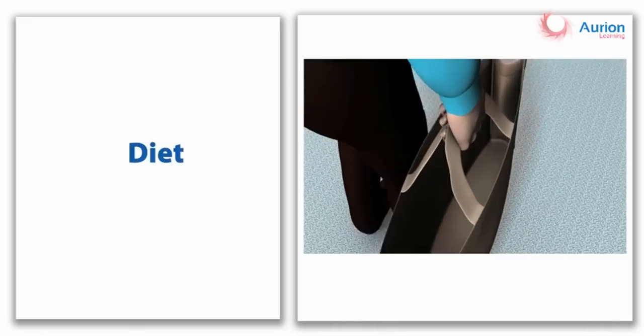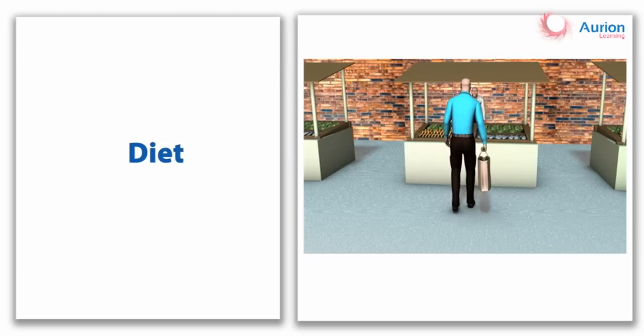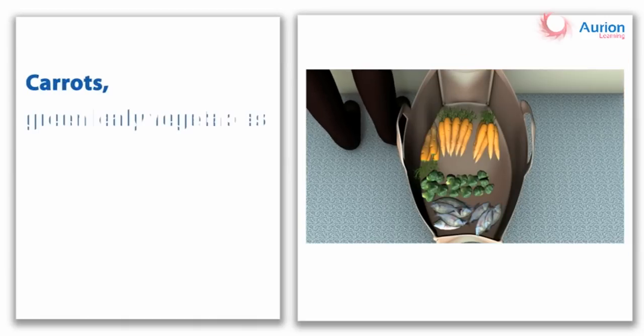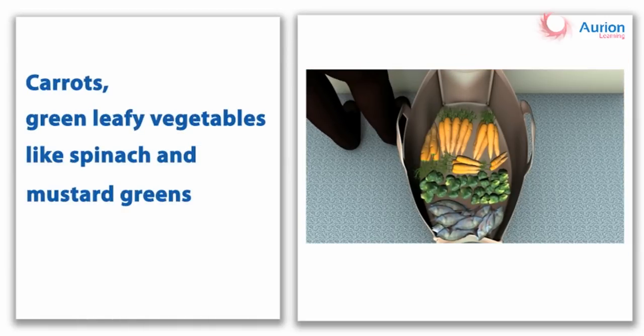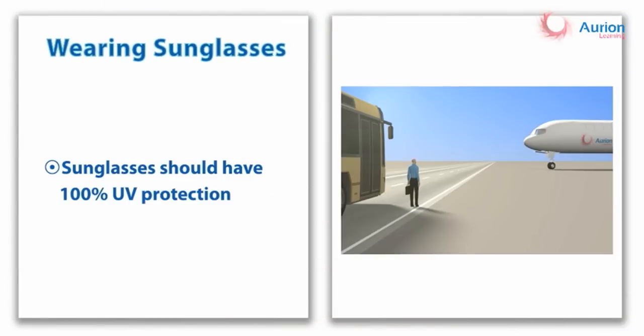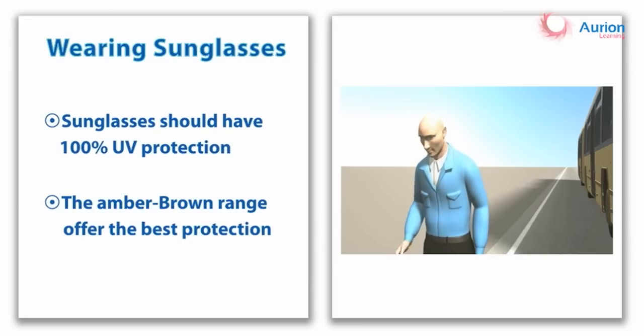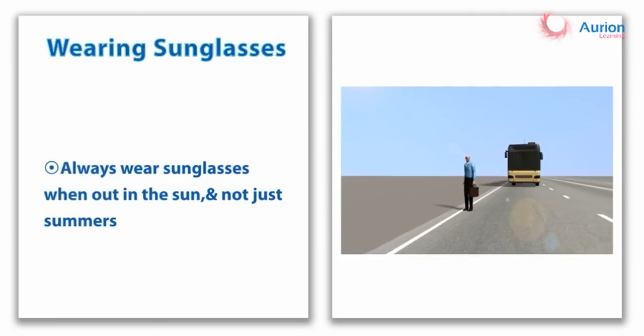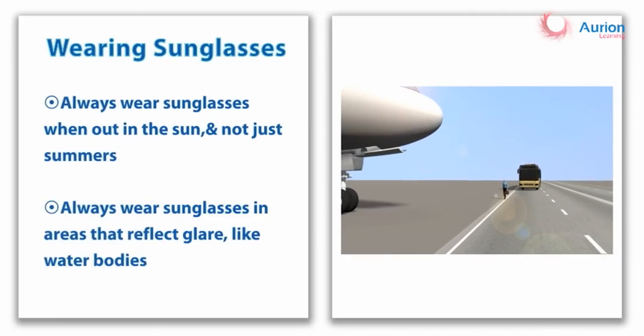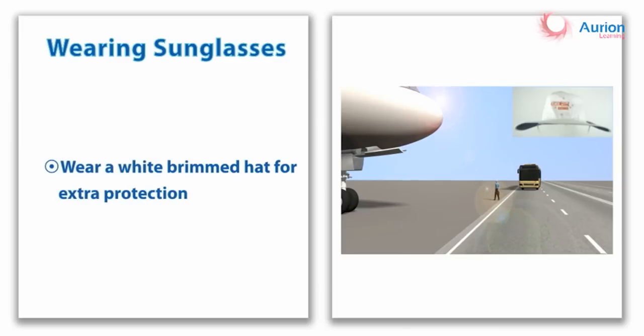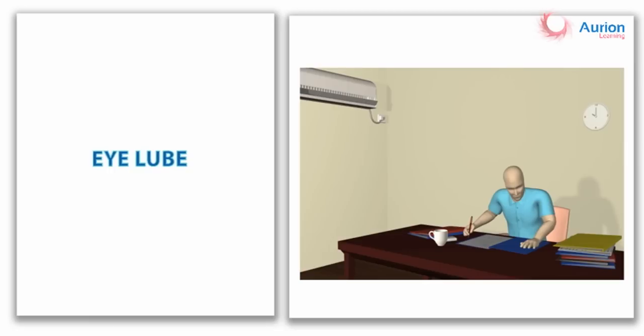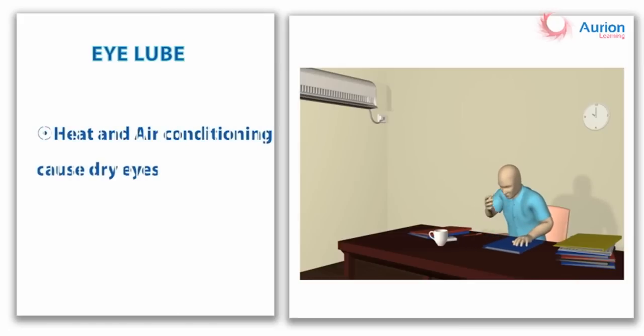There are various things we can do. One, diet: we can take care of our eyesight by eating the correct food. Carrots, green leafy vegetables, fish, and flaxseed all help in protecting our eyes. Two, wear sunglasses: we don't realize that sunlight has UV rays that are harmful to our vision. We need to wear proper sunglasses that give 100% UV protection in all weather to protect our eyes. The amber-brown range offers the best protection. Remember the effect of sunlight is even more intense in areas that reflect glare. We could also wear a wide-brimmed hat for extra protection.